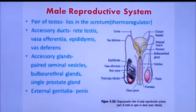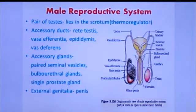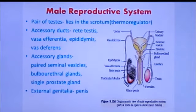Next is vasa efferentia. Then epididymis, which is a single coiled structure, continued as vasa efferentia. These are all the accessory ducts.